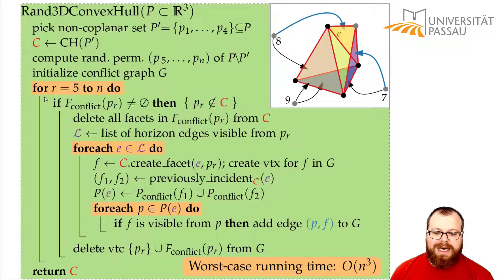So this means that we have order of n to the 3 worst case running time. This is pretty bad. n to the 3 is nothing we ever really want. But you can probably guess that in the expected case this is much better. So the randomization helps us. And in the next part we want to analyze what's the expected running time.